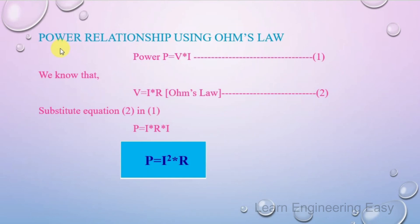Next, we derive the power relationship using Ohm's Law. We know the basic power formula: P = V × I. And from Ohm's Law, V = I × R. Let's call these equation 1 and equation 2.